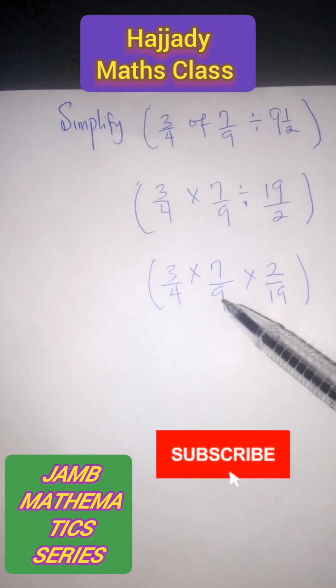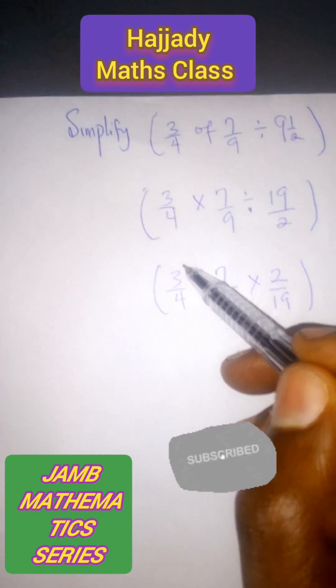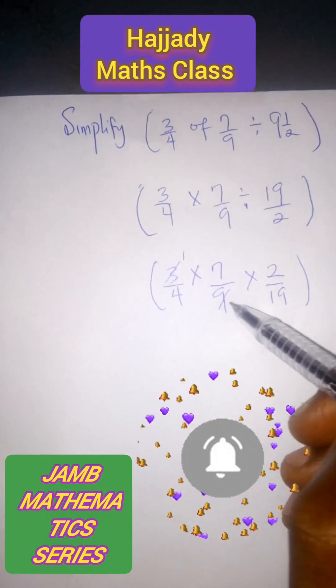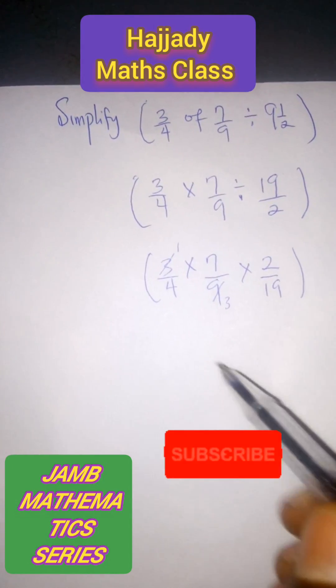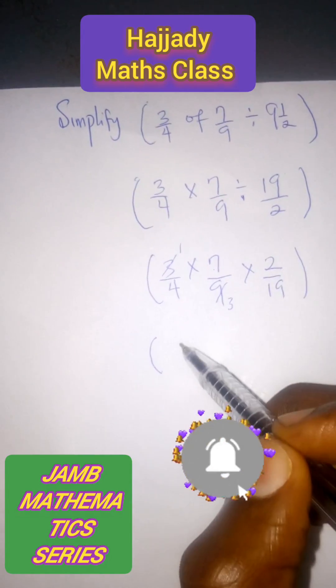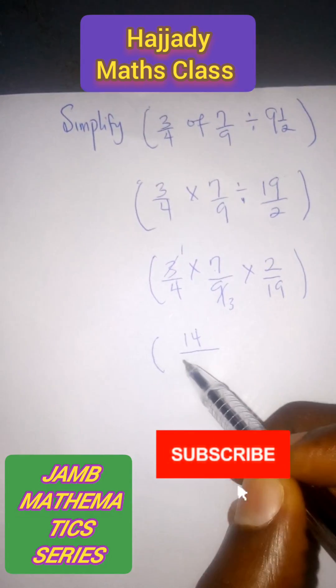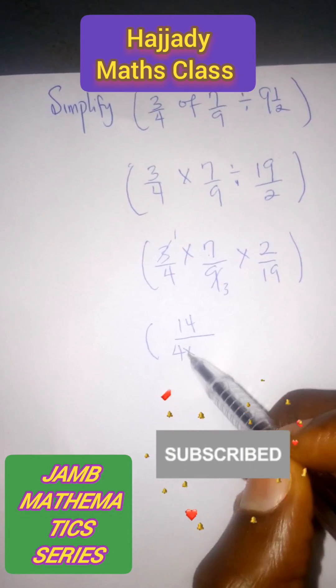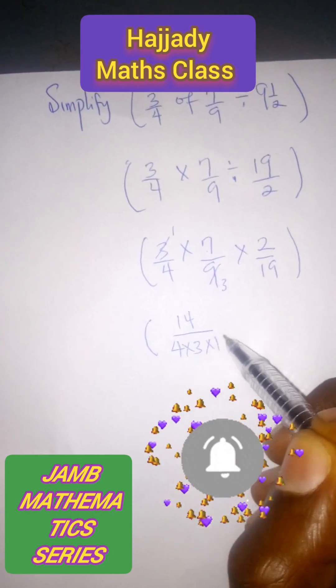So from this we can only cancel 3 into 9 in 3. And here we have 1 times 7 times 2 gives 14.